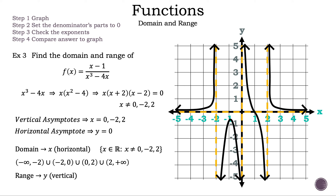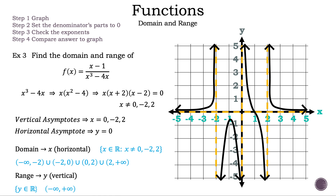Now let's write down the range. We can write it as y is an element of all real numbers. Our range is all real numbers because one of the sections of the graph crosses the horizontal asymptote at the point (1, 0). Using interval notation we can write it as the unbounded interval of negative infinity to positive infinity. That is the domain and range of our function. That is example three.